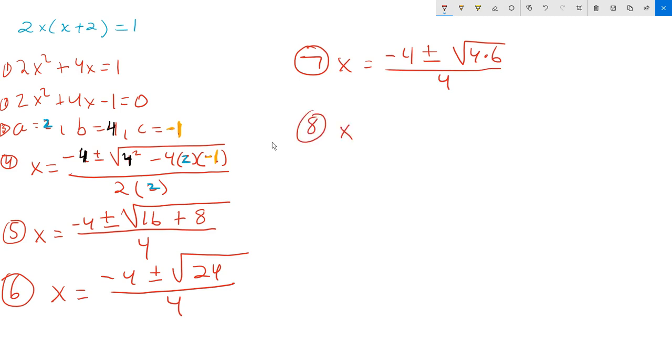Step 8. x equals -4 ± √(4×6) / 4. Then you apply the root to the 4 and the 6 individually. When you have the root of a product, you can distribute the root to each factor of the product individually. Then at step number 9, I will have x equals -4 ± 2√6 / 4. The root of 4 is 2. You copy the root of 6.